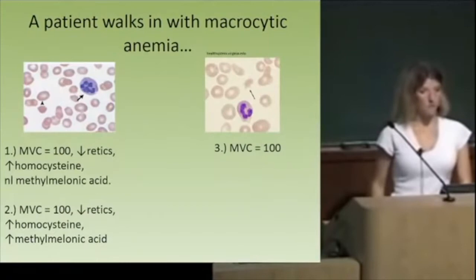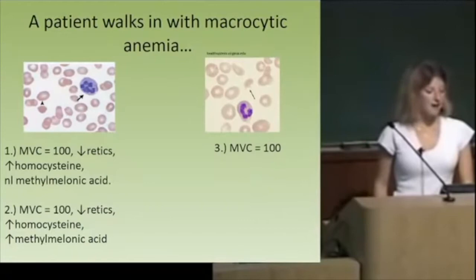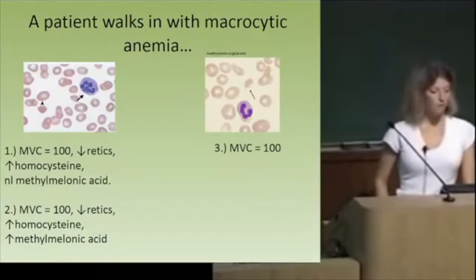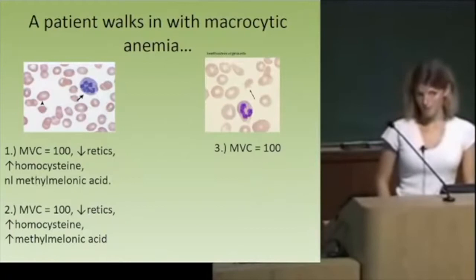So for macrocytic anemia, if you see a hypersegmented neutrophil — what if the vignette shows high MCV and high homocysteine but normal methylmalonic acid? That's folate deficiency. What if both homocysteine and methylmalonic acid are high? That's B12 deficiency.